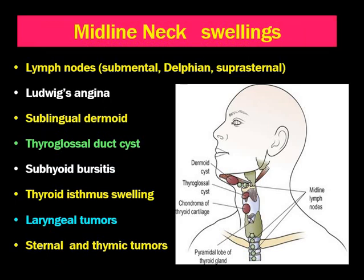True midline neck swellings may be lymph nodes, which are most common. They may be submental — just below the mentum — Delphian, pretracheal or prelaryngeal, and suprasternal neck nodes in the midline.